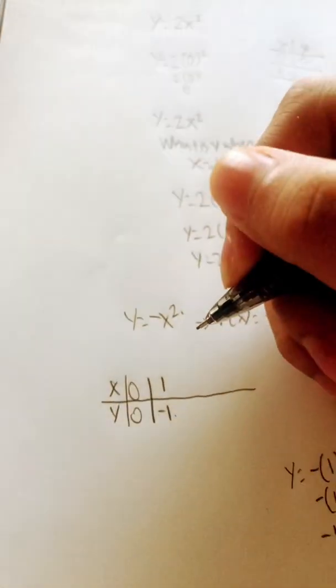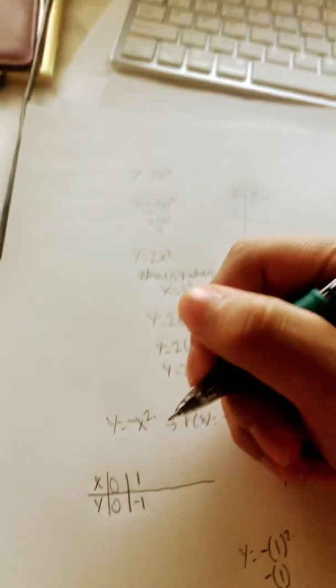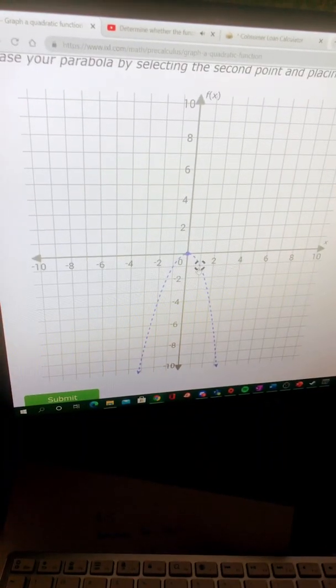So plotting these two points, you have something like this. So 0, 0 and then 1, negative 1.